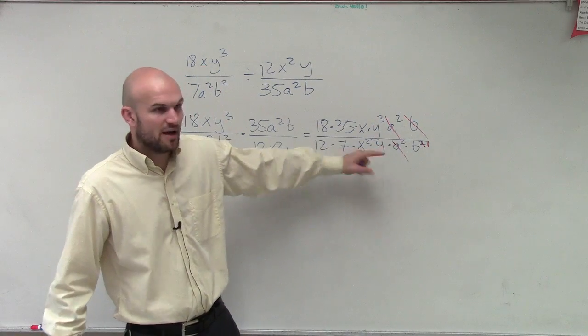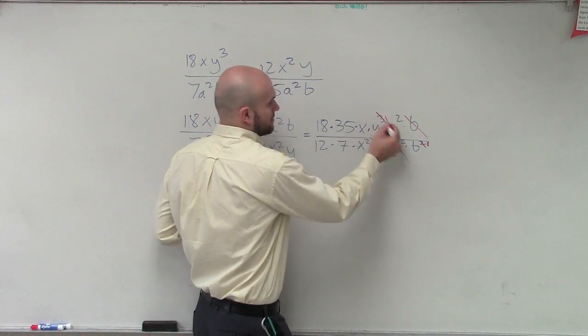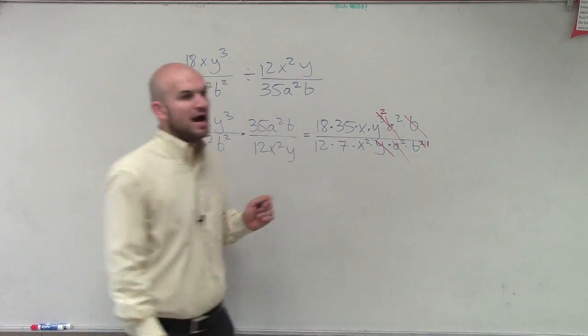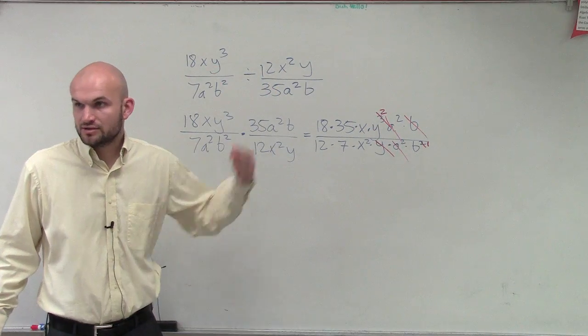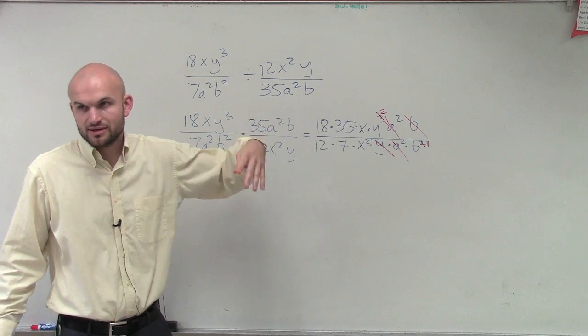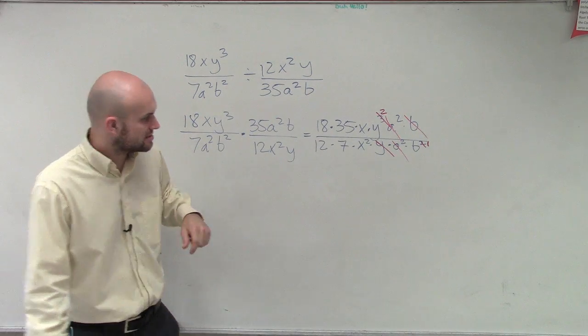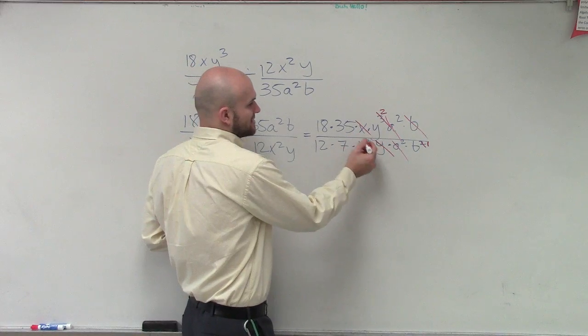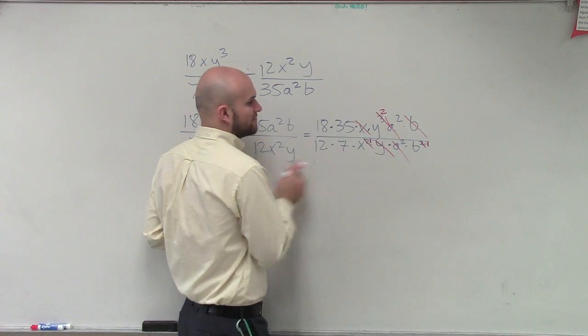y cubed divided by y is going to leave you y squared in the numerator, right? Because y cubed minus y to the first is y to the second. Remember, you subtract the exponents. This will leave you an x in the denominator, x to the first power.